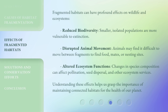Fragmented habitats can have profound effects on wildlife and ecosystems. Reduced biodiversity: smaller, isolated populations are more vulnerable to extinction. Disrupted animal movement: animals may find it difficult to move between fragments to find food, mates, or nesting sites. Altered ecosystem functions: changes in species composition can affect pollination, seed dispersal, and other ecosystem services. Understanding these effects helps us grasp the importance of maintaining connected habitats for the health of our planet.